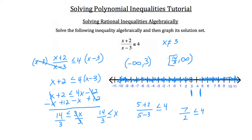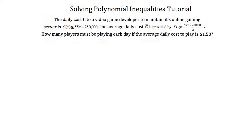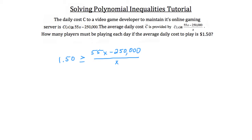Now that we've seen how to solve polynomial inequalities, let's look at a word problem. The daily cost C to a video game developer to maintain its online gaming server is C(x) = 55x minus 250,000. The average daily cost is C(x) = (55x minus 250,000) over x. How many players must be playing each day if the average daily cost to play is $1.50? We want to plug $1.50 into C(x). We also know right away that x cannot equal 0, since division by zero is undefined.